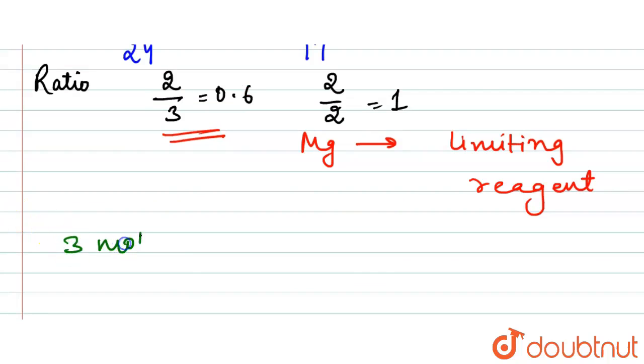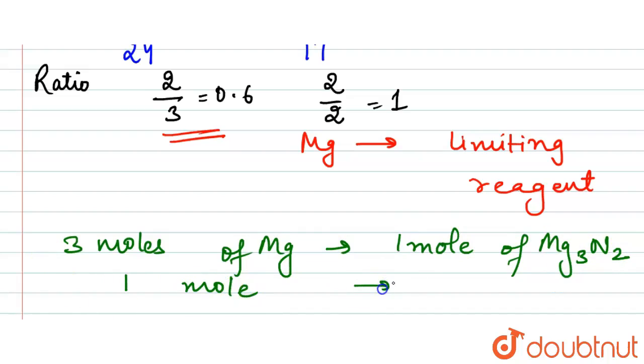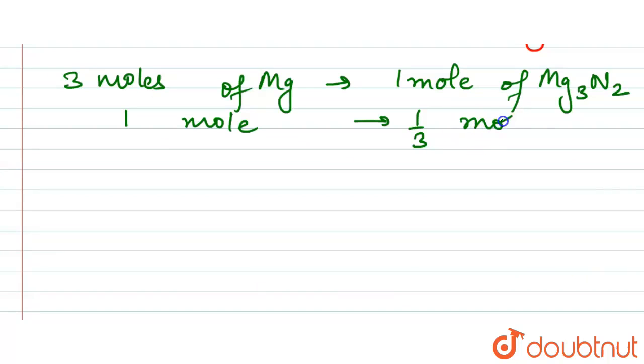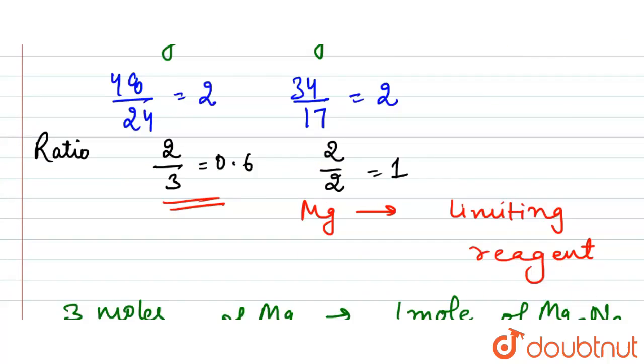So here if we see, 3 moles of Mg gives us 1 mole of Mg3N2, magnesium nitride. Then 1 mole will give us 1 upon 3 mole.